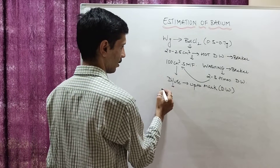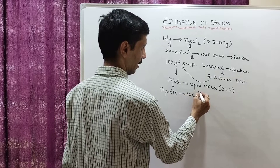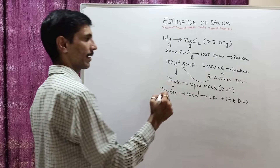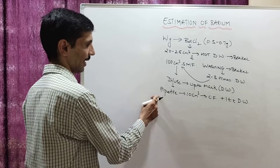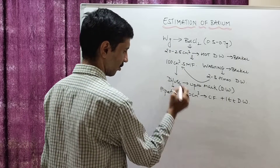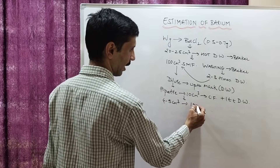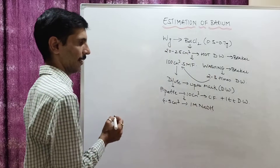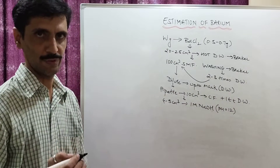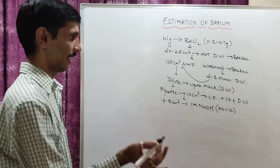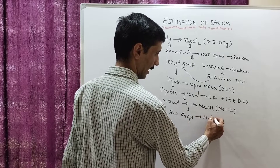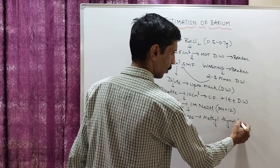Pipette out 10 cm³ of the prepared solution into a conical flask, and add about one test tube of distilled water so that the color change becomes much more apparent and clear. Then add around 4 to 5 cm³ of 1 molar NaOH — as explained in the theory, this ensures the pH of the solution is around 12. Then add a few drops of methyl thymol blue indicator.